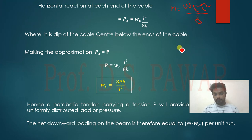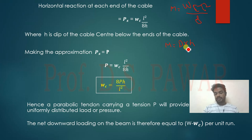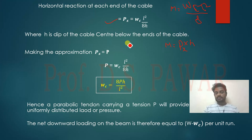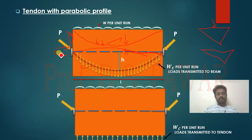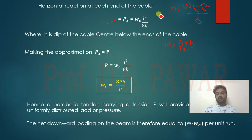Writing moment in terms of force and eccentricity: M = P × H, where H is the dip and P is the force. Substituting Px × H = WcL²/8, we get Wc = 8PxH/L². Making the approximation that the angle is very small, Px is equal to P. Therefore, P = WcL² / 8H, and rearranging, Wc = 8PH/L².